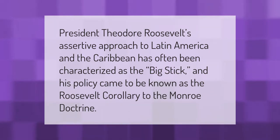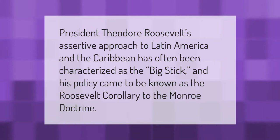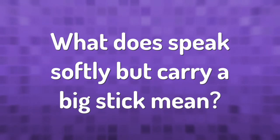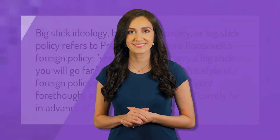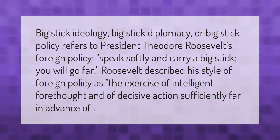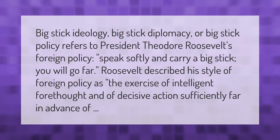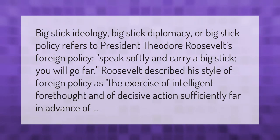President Theodore Roosevelt's assertive approach to Latin America and the Caribbean has often been characterized as a 'big stick,' and his policy came to be known as the Roosevelt Corollary to the Monroe Doctrine. Big stick ideology, big stick diplomacy, or big stick policy refers to Roosevelt's foreign policy: 'speak softly and carry a big stick, you will go far.' Roosevelt described his style of foreign policy as the exercise of intelligent forethought and of decisive action sufficiently far in advance.